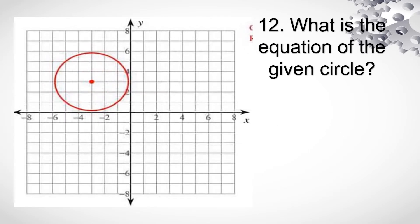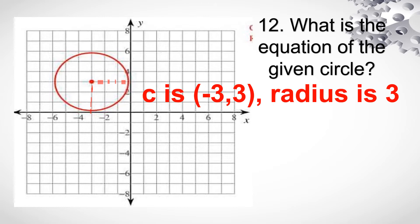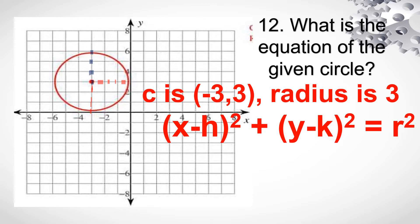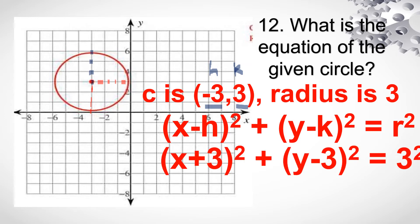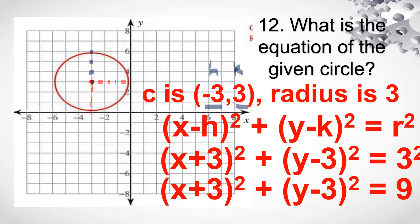Number 12. What is the equation of the given circle? Kailangan nyo muna kunin yung center. So ang center natin ay nandito sa negative 3, positive 3. Ang radius natin — from the center, bilang tayo 1, 2, 3 units — so radius is 3. So substitute natin yung h natin, negative 3, at yung k natin ay positive 3. Palitan ng sign: so magiging x minus minus 3 — x plus 3 squared plus y minus 3 squared is equal to 3 squared. So that will give us the equation x plus 3 squared plus y minus 3 squared is equal to 9.